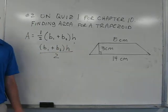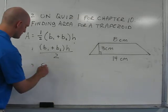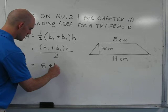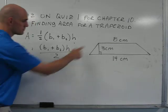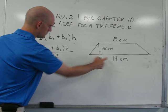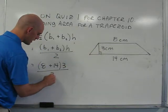All we need to do now is plug in what we know. So the area is equal to eight plus fourteen - base one and base two - times the height, which is three, divided by two.